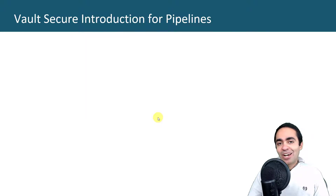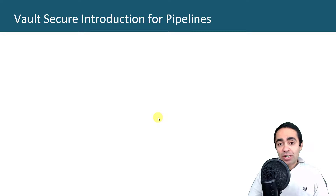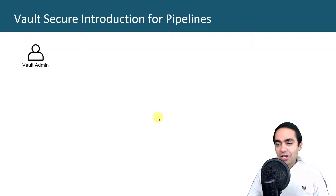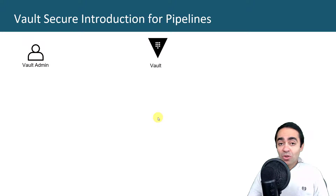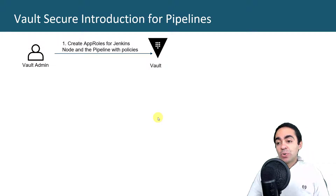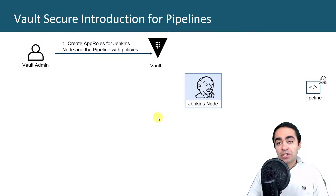There are two places in my application where I use secure introduction: first for the Jenkins pipelines, and second for the actual weblog application. We start with a Vault admin who needs to do a few things inside Vault — done manually, only once, and from that point everything is automated. The Vault admin first creates AppRoles — an authentication method within Vault — for both the Jenkins node and the Jenkins pipeline. I'm making a distinction between the Jenkins node itself and the Jenkins pipeline, creating a separate AppRole for each, along with associated policies.